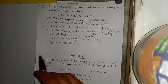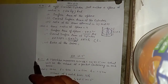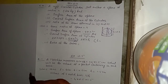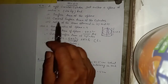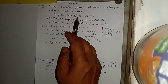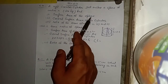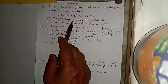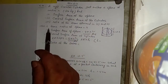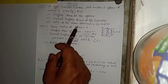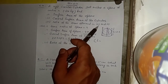Exercise 13.4, question number 9, class 9. A right circular cylinder just encloses a sphere of radius r — see figure. Find: number one, surface area of sphere; number two, curved surface area of the cylinder; number three, ratio of the areas obtained in first and second.